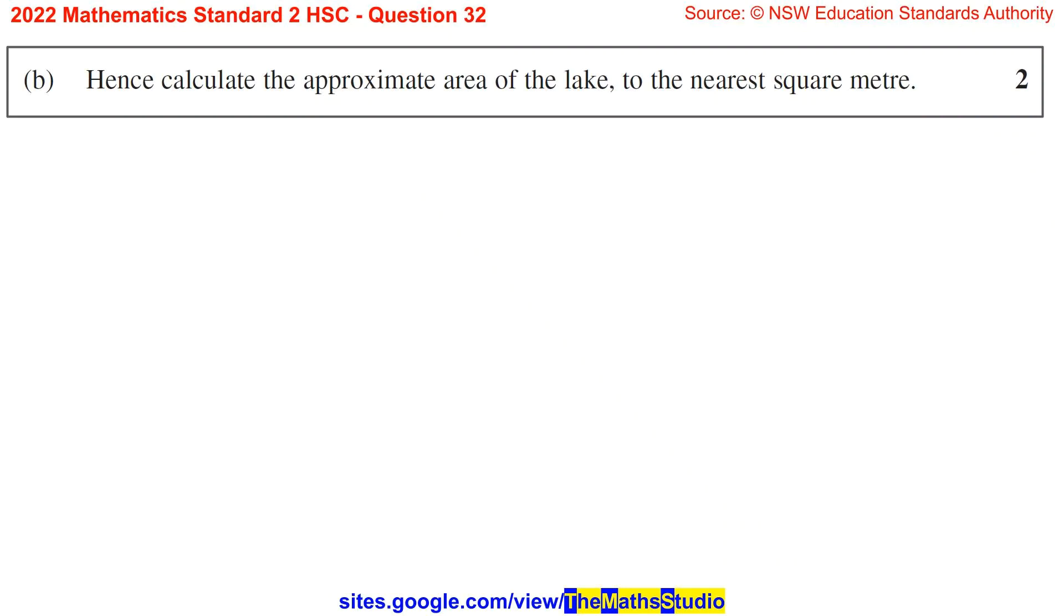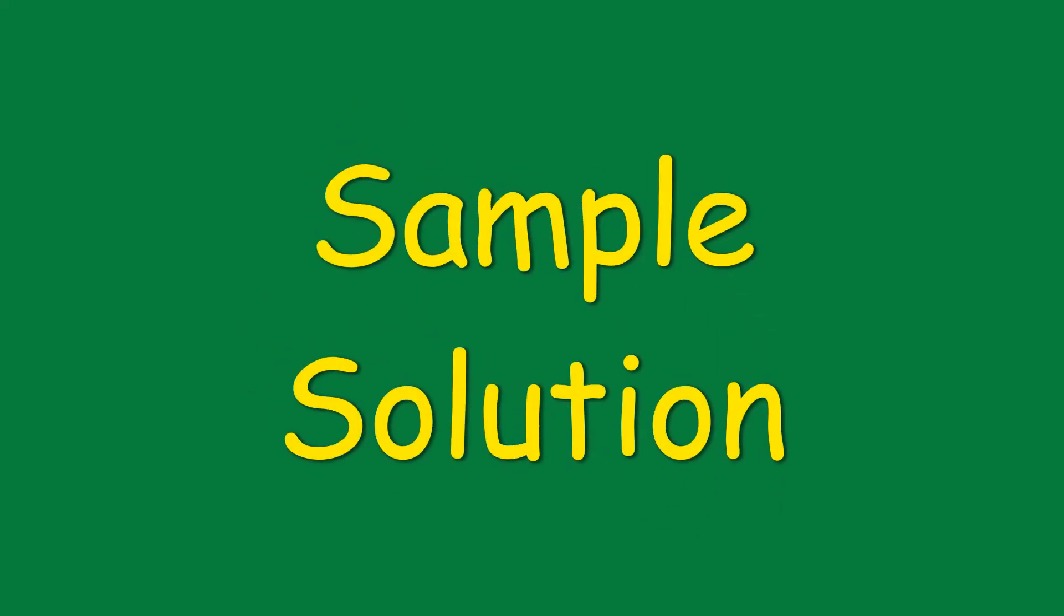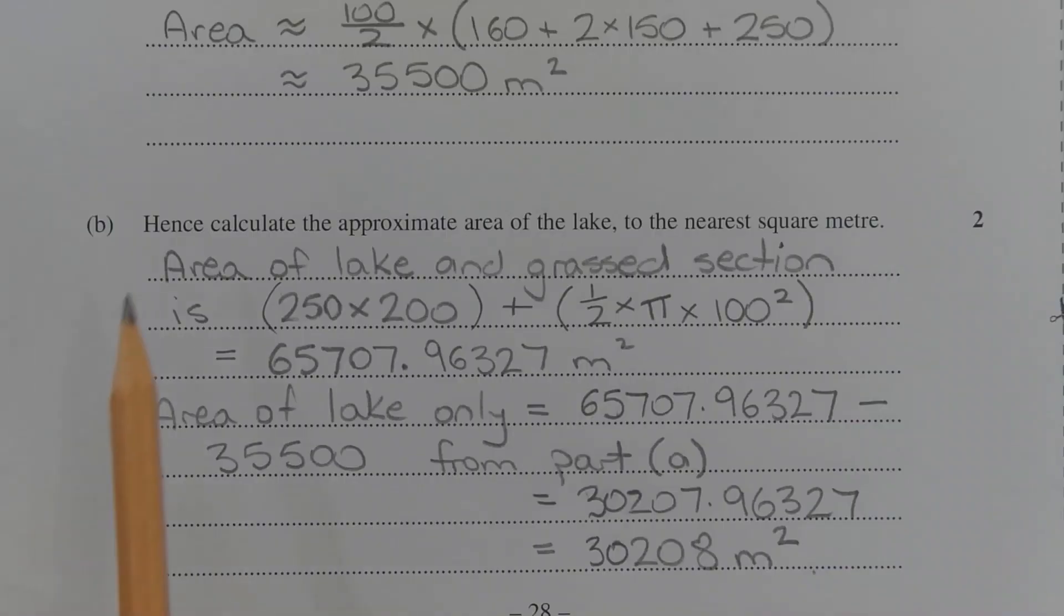Part B. Hence calculate the approximate area of the lake to the nearest square metre. The word hence in the question means we need to use the result of the previous part, in this case part A, to help us answer part B.